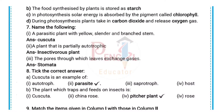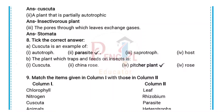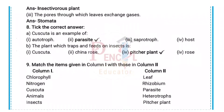Seventh question: Name the following. (i) A parasitic plant with yellow, slender and branched stem — Answer: Cuscuta. (ii) A plant that is partially autotrophic — Answer: Insectivorous plant. (iii) The pores through which leaves exchange gases — Answer: Stomata.